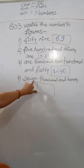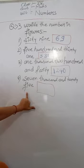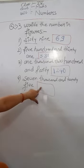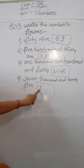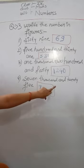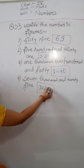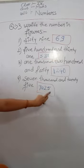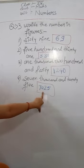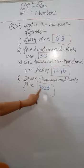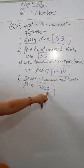Next is seven thousand and twenty-five. 7 is in the thousands place — 7000 — and 25. So 25 and 7000. We have to put a zero here because 7 is in the thousands place. So the answer is 7025. Clear?